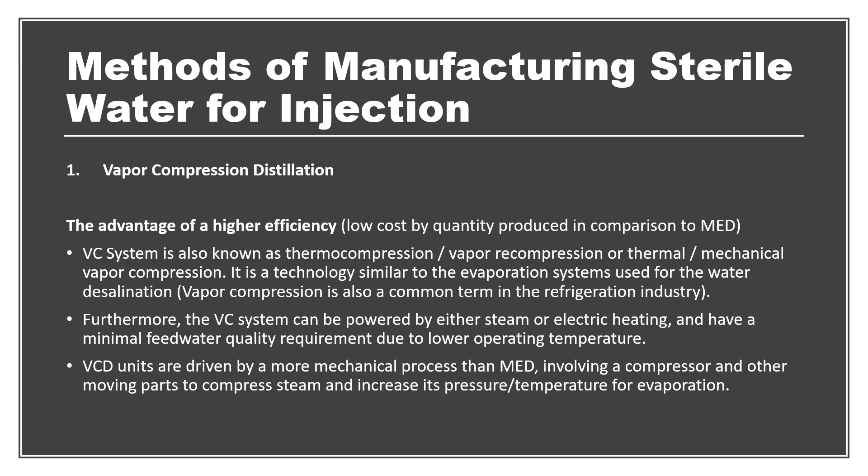Next we move to understanding the different methods for manufacturing sterile water for injection. Water for injection is generally prepared through steam distillation, where vapors are condensed and water is collected. At a commercial level, three methods are used. The first is the vapor compression distillation method, which is an advanced version of distillation where steam is vaporized, the vapors are collected and condensed, and pure water is formed.